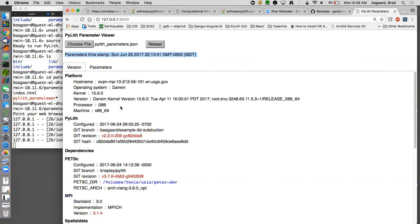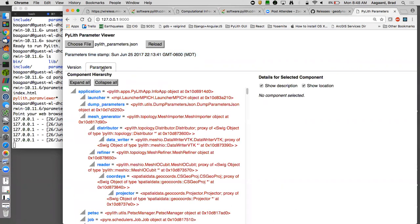The version tab is very helpful for us when we're trying to diagnose problems on your end, as well as the parameters. That's why instead of sending your .cfg files, we want you to send us this JSON file with all of the parameters that you have.